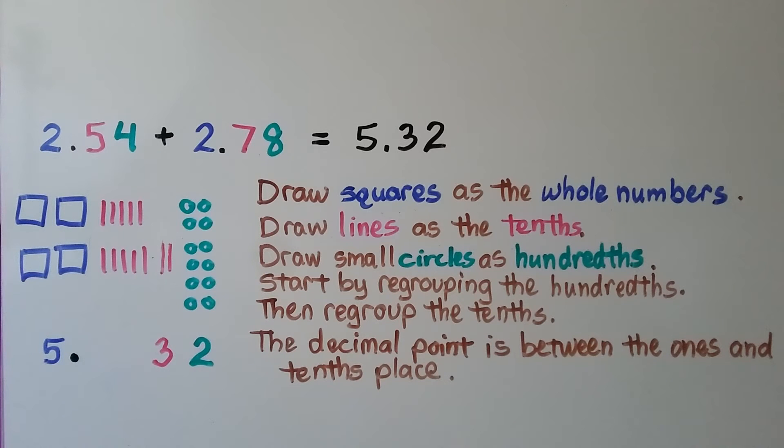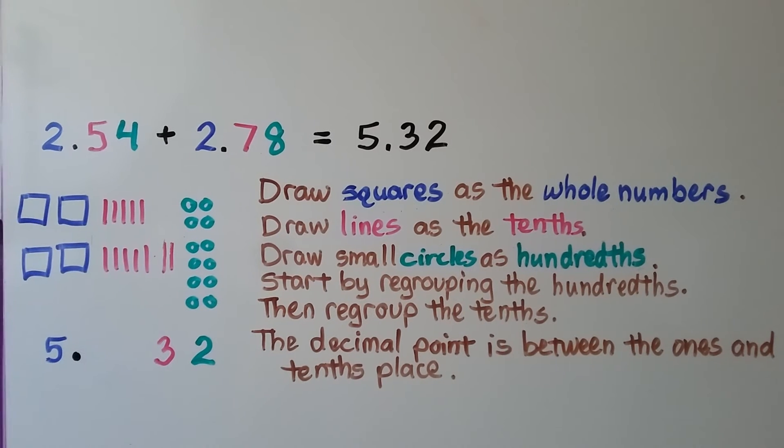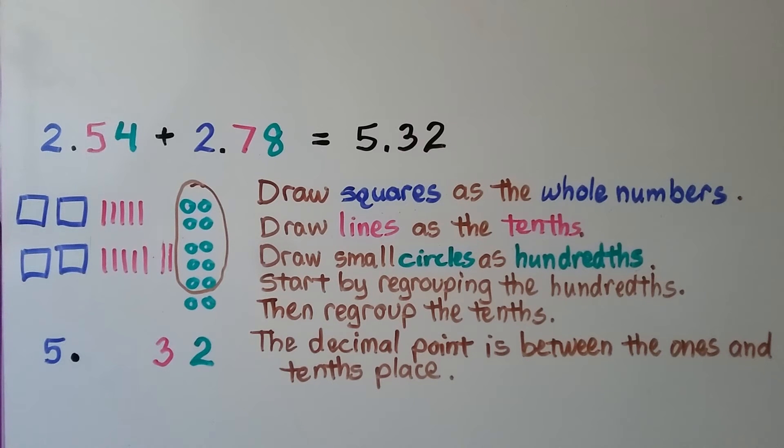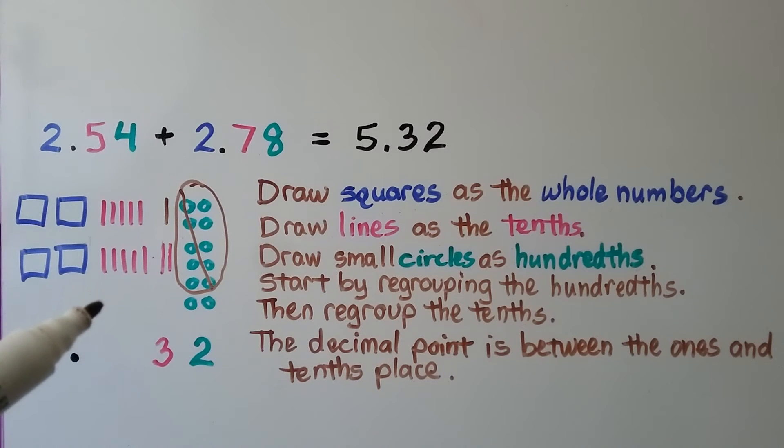We start by regrouping the hundredths. We can see that we can make a 10 here. We cross it out and add a line to the tenths. Now we count our tenths and regroup them if we can. We have 1, 2, 3, 4, 5, 6, 7, 3 more and we'll be able to make a group of 10. That would be 10 tenths. We can make another whole.